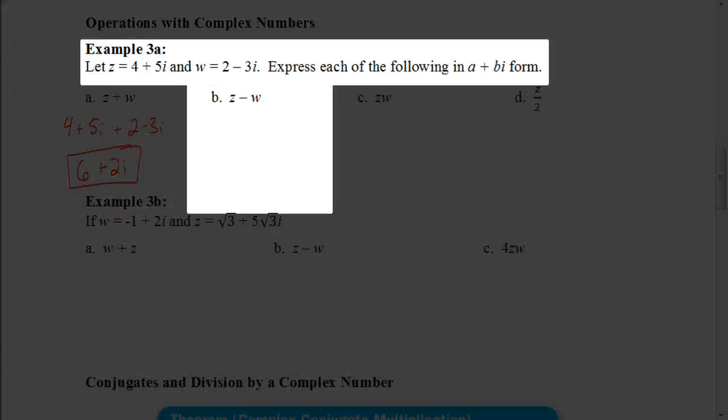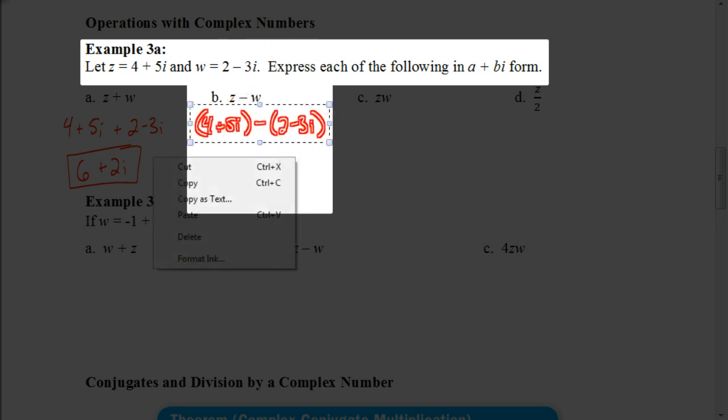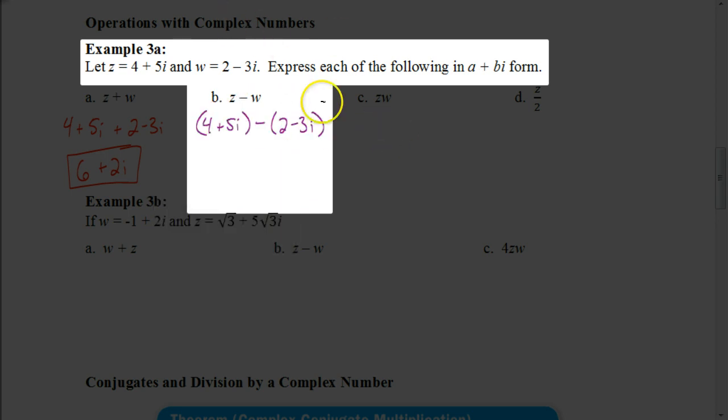Now let's look at the next one. The next one is z minus w. Now this gets a little bit more complicated, because subtraction means that we're going to subtract all of w from z. So here's how I'm going to write this. I'm going to say 4 plus 5i. If you want to put this in parentheses, you can. But it's going to be minus. It's very important to put this next part in parentheses, because we're subtracting all of it, the 2 minus 3i, from that previous complex number.